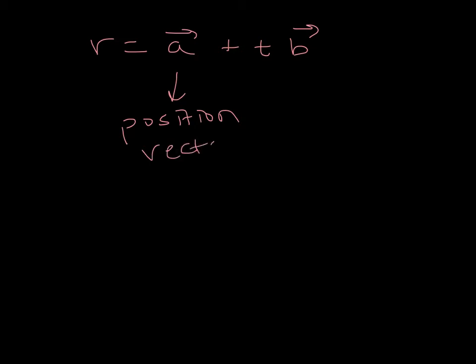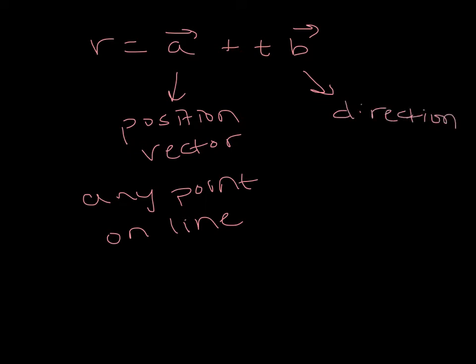And it represents any point that's on your equation of your line. And then your B vector is kind of like your slope. It's what we would call your direction vector. And it represents what direction and how far it's going in the X, Y, and Z direction.